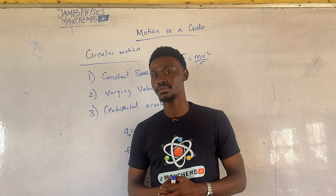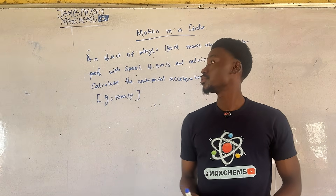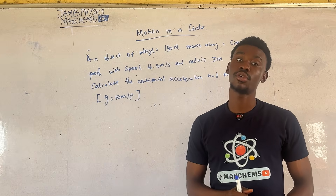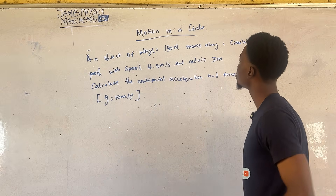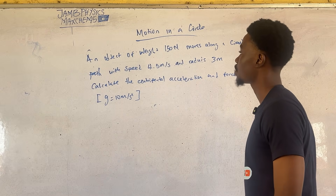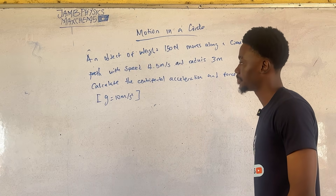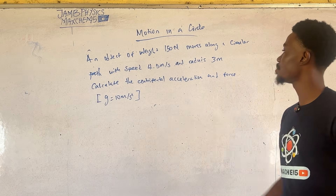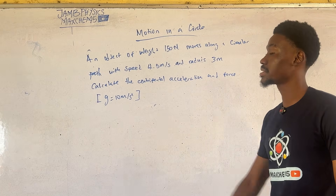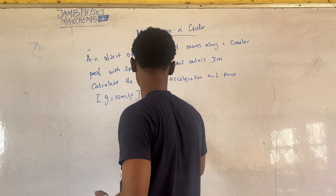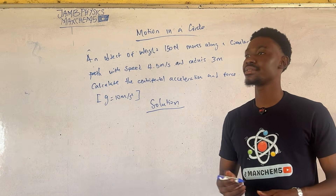I'm going to give you an example of how we can solve a question on circular motion. An object of weight 150 Newton moves along a circular path with speed 4.5 meters per second and radius 3 meters. Calculate the centripetal acceleration and force, given that the acceleration due to gravity is 10 m/s². All the vital parameters have already been provided.